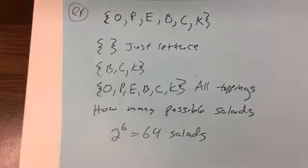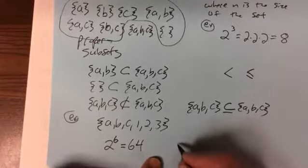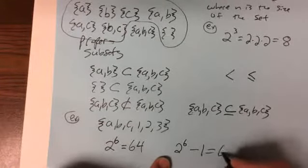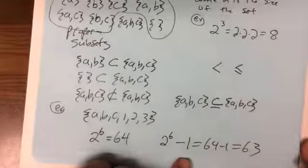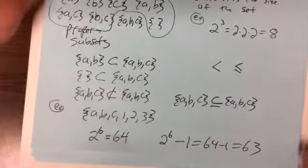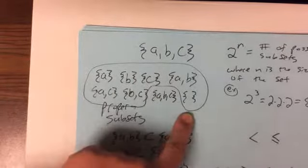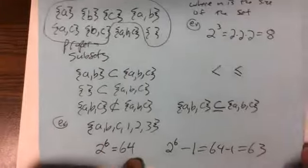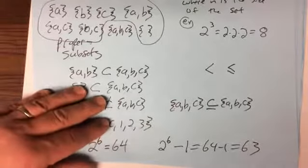If you want to know the number of proper subsets, take 2 to the n and subtract 1, because you're subtracting the set itself. So for the 6-element set, it's 64 minus 1 = 63 proper subsets. For {A, B, C}, there are 8 subsets but 7 proper subsets.